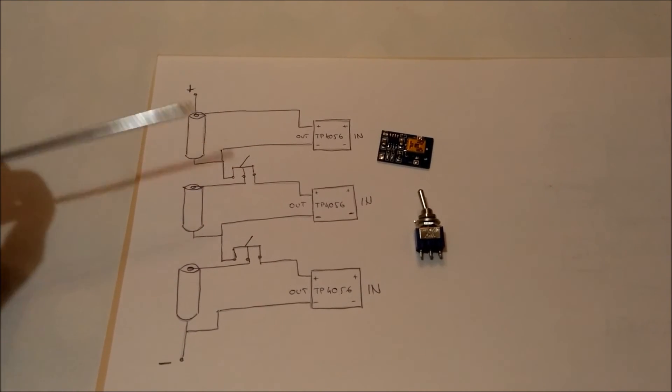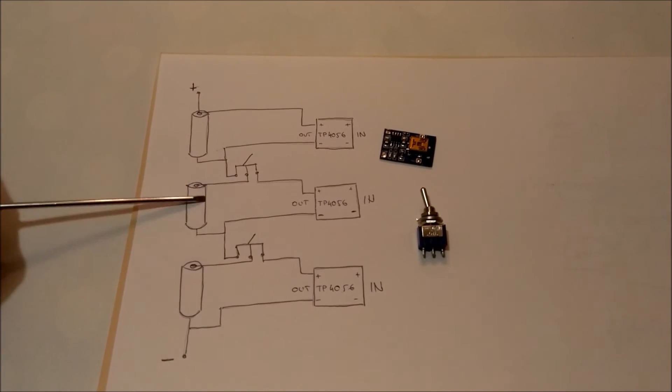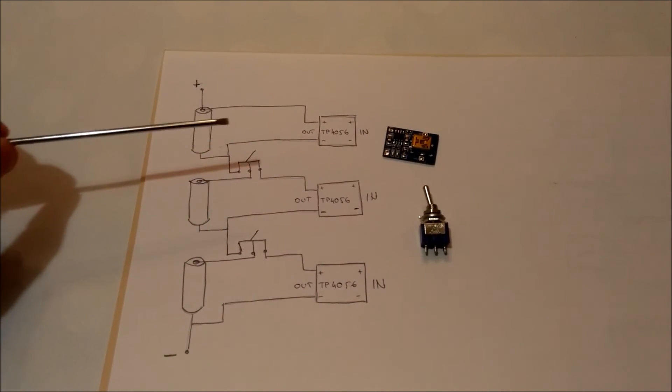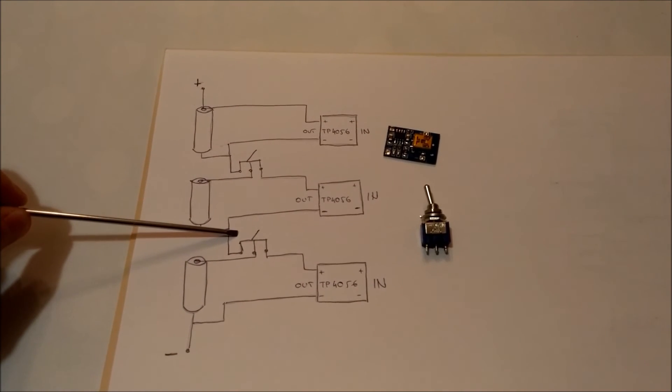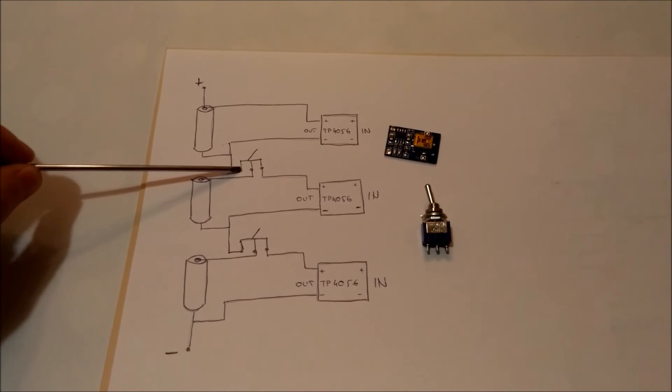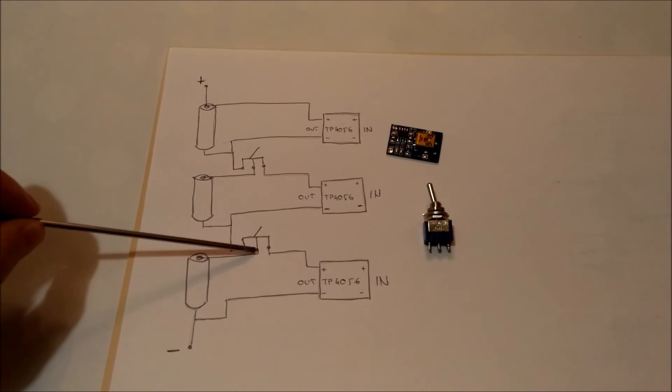Now, if we want to charge the batteries, especially to charge every cell for itself using TP4056, we can turn these switches on the other side. At the same moment, these nodes here and here would be off and this connection would be made.